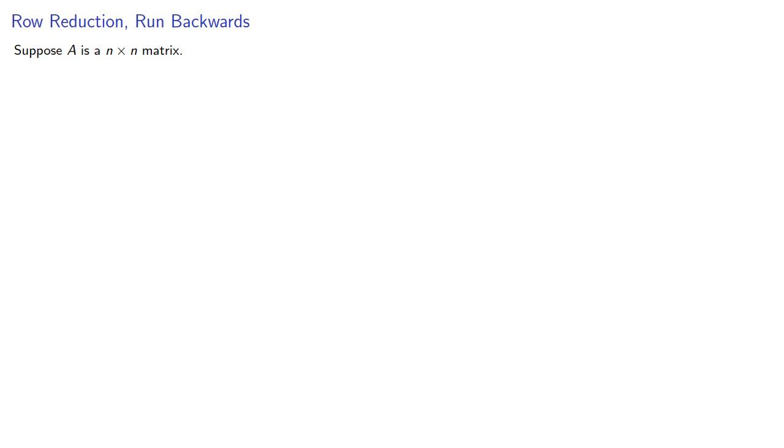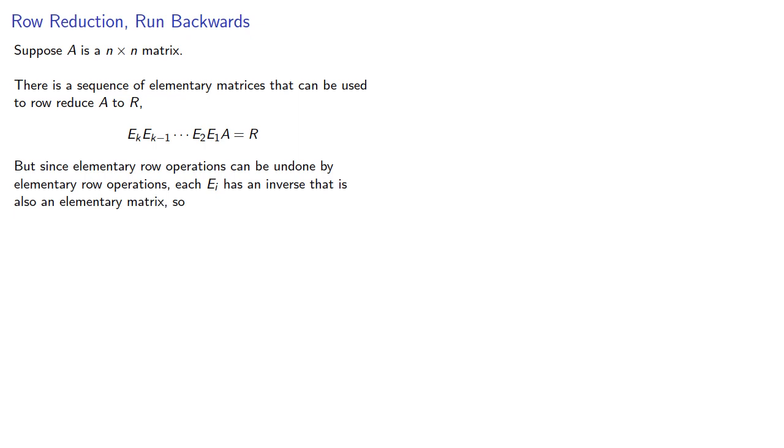Suppose A is an n by n matrix. There's a sequence of elementary matrices that can be used to row reduce A to R, but since elementary row operations can be undone by elementary row operations, each EI has an inverse that is also an elementary matrix, and so we can write A as a product.